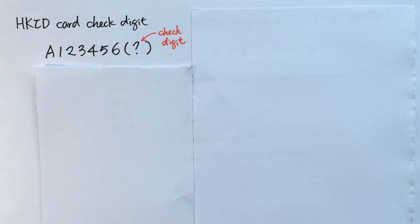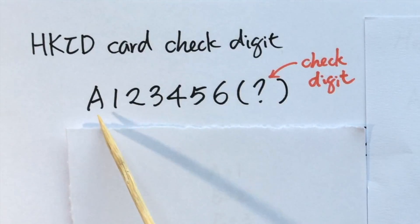Hong Kong ID card check digit. Every citizen in Hong Kong should have a Hong Kong ID card, and in each card we have a card number. For example, this one is A123456.